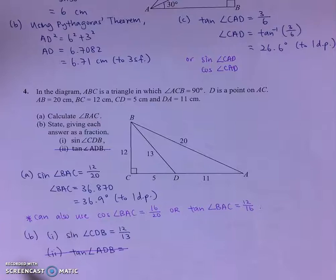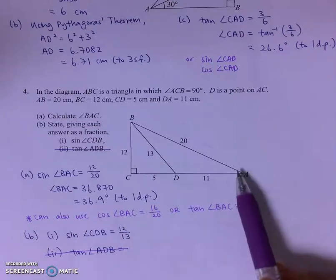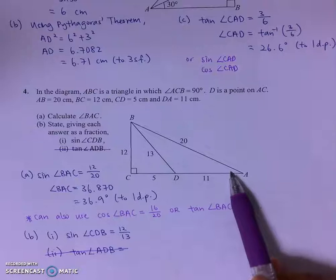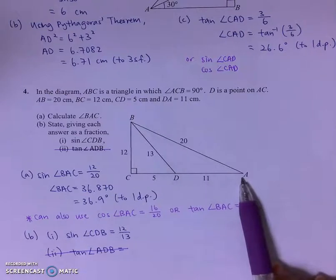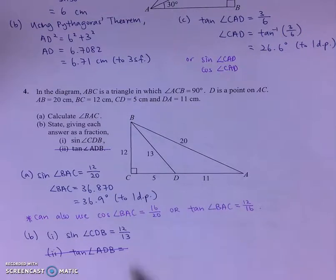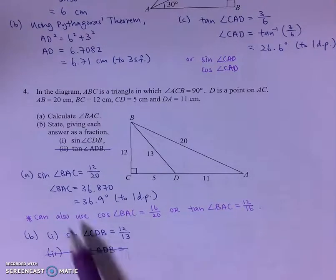So I'll make use of my right-angled triangle ABC. I do know of all three lines. So really, it's up to you. You can use sine, cosine, or tangent to get the answer.